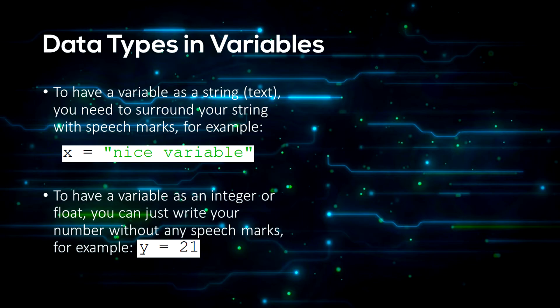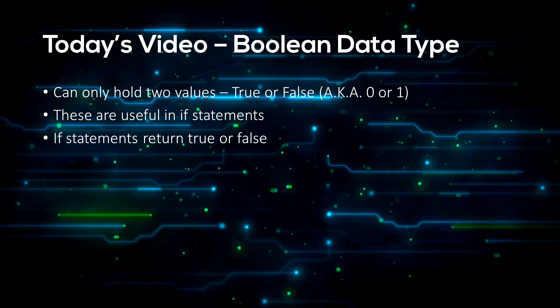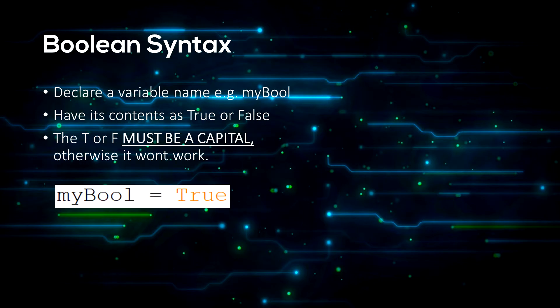Numeric types are shown by just writing the number. Lastly, we have booleans — true or false. They can only be one or the other, and they are written with their first letters as a capital. Python won't recognise them otherwise.